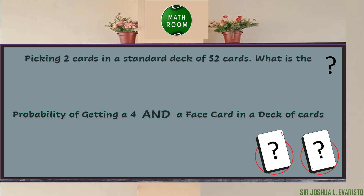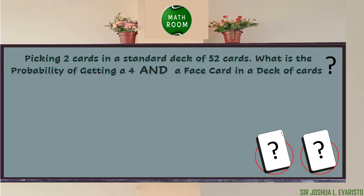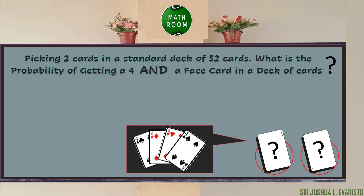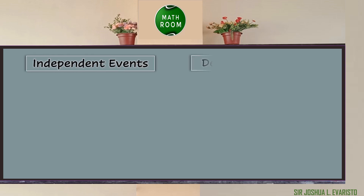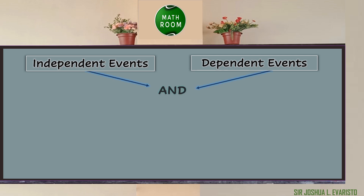How about if the problem uses the conjunction 'and' instead of 'or'? For example, picking two cards from a standard deck of 52 cards — what is the probability of getting a four and a face card? We are concerned with choosing two cards: one must be a four and the other a face card. That is what we will discover in this video. We will talk about independent and dependent events, both of which use the conjunction 'and' instead of 'or'.